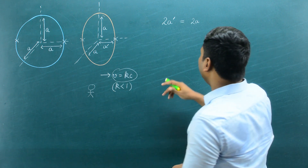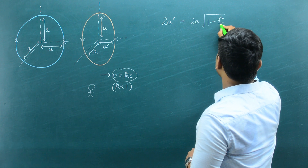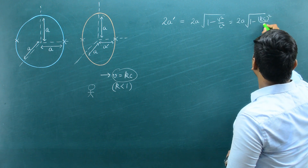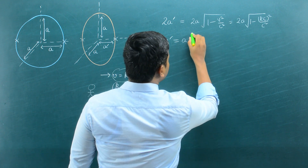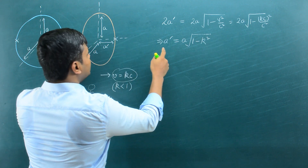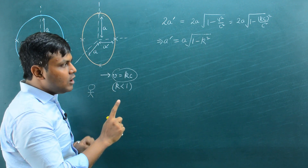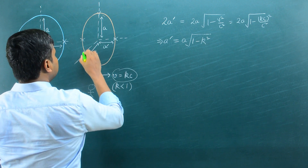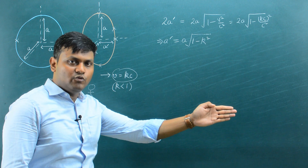These quantities are related by the length contraction formula: the measured length equals the proper length multiplied by √(1 − v²/c²). With v = kc, we get a′ = a√(1 − k²). The distance in the perpendicular directions — along the y-axis and z-axis — remains 2a, because lengths do not contract in directions perpendicular to the relative motion.